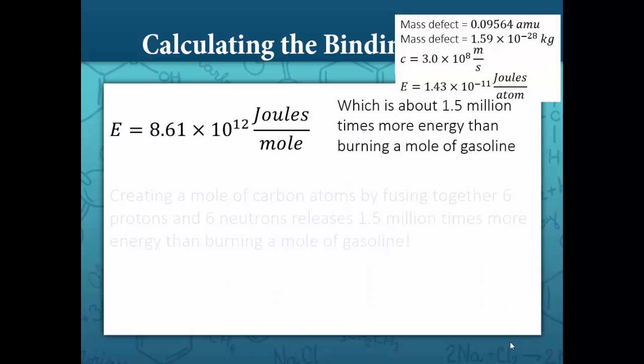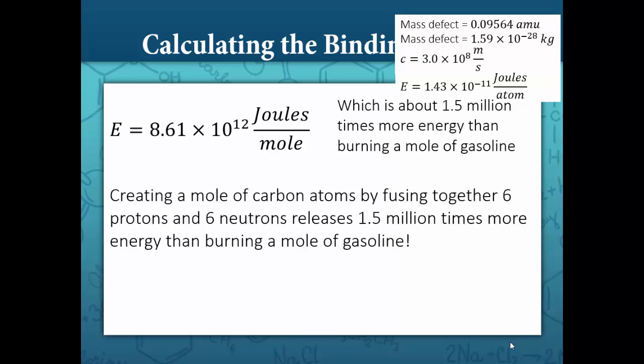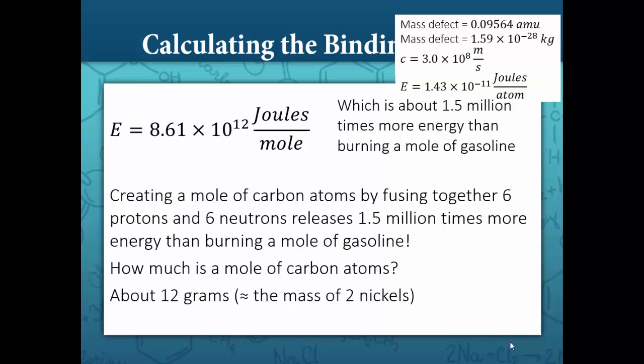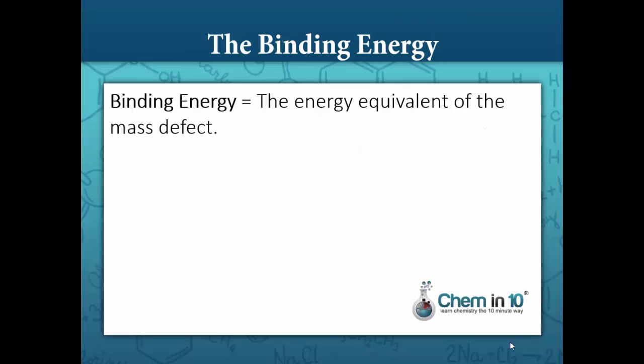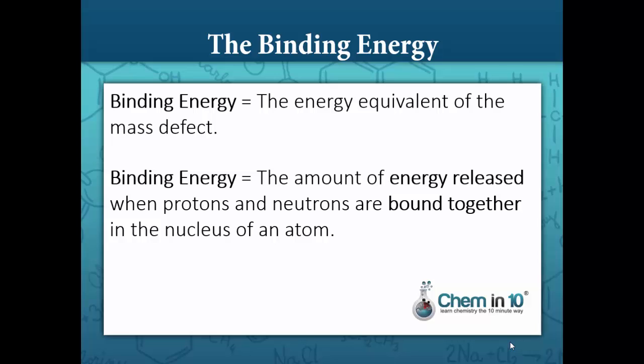In other words, creating a mole of carbon atoms by fusing together 6 protons and 6 neutrons releases 1.5 million times more energy than burning a mole of gasoline. And recall that a mole of carbon atoms is only about 12 grams, which is approximately the mass of 2 nickels. I've referred so far to the binding energy as the energy equivalent of the mass defect. Its more official definition is the amount of energy released when protons and neutrons are bound together in the nucleus of an atom.